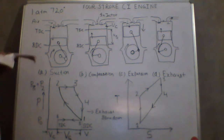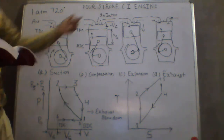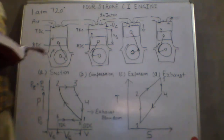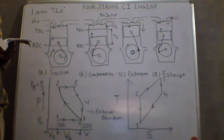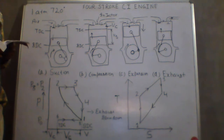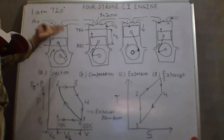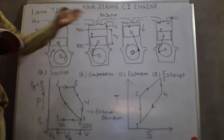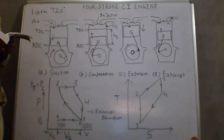Good morning. We will start with the four-stroke compression ignition engine. The four-stroke compression ignition engine is similar to the four-stroke spark ignition engine, but it operates at a much higher compression ratio. The compression ratio in the case of a spark ignition engine is between 6 to 10, while in the case of the compression ignition engine it is between 16 to 20.